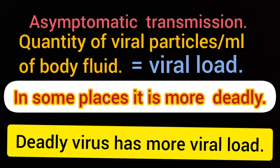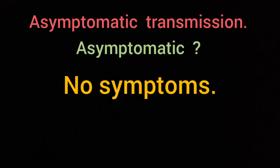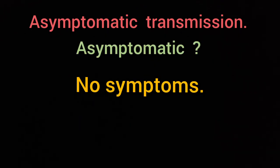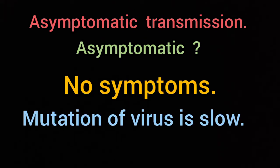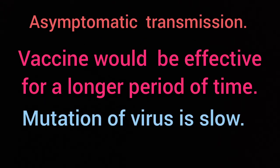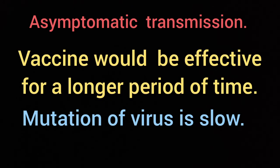One thing to remember: the virus has been showing asymptomatic transmission. Asymptomatic means showing no symptoms. According to some researchers, the mutation of the virus is slow. If that is true, the vaccine would be effective for a longer period of time.